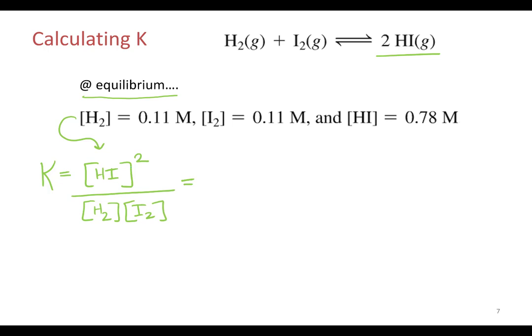So, what's our concentration of HI? 0.78, 0.78 molar squared. All over concentration of the hydrogen, 0.11. Iodine, also 0.11.